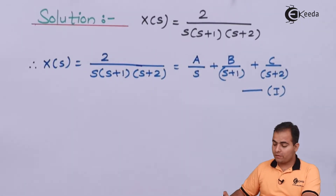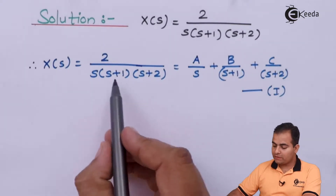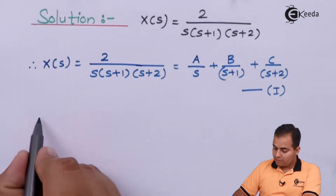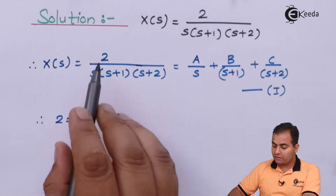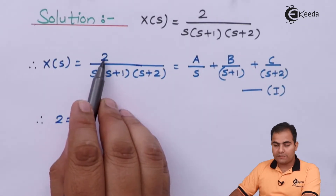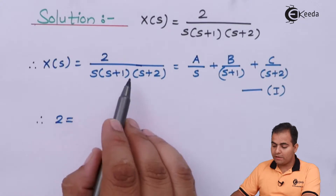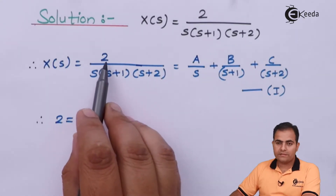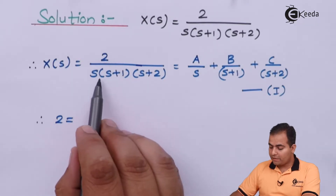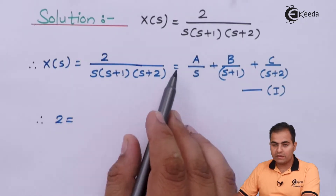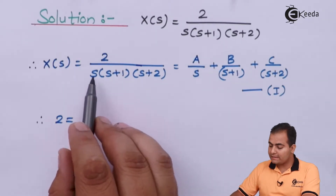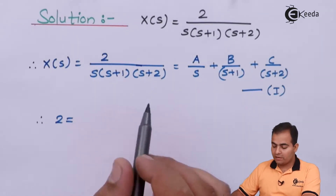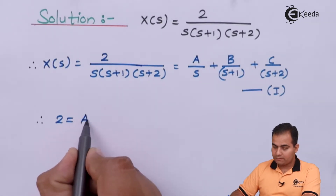First of all, we have to make one equation. We will multiply this whole denominator with A. So on the left hand side we have only 2, because the denominator part is multiplying on the right hand side. After multiplying this denominator with A over S, S gets cancelled but S plus 1 and S plus 2 will remain. So A is multiplied with S plus 1 and S plus 2.